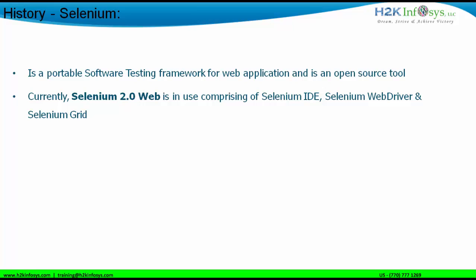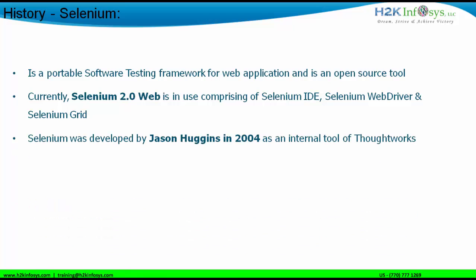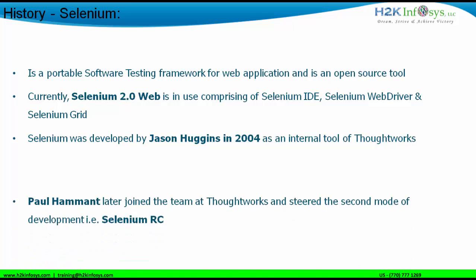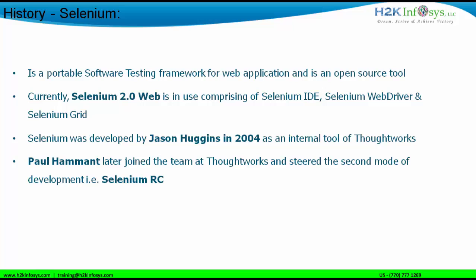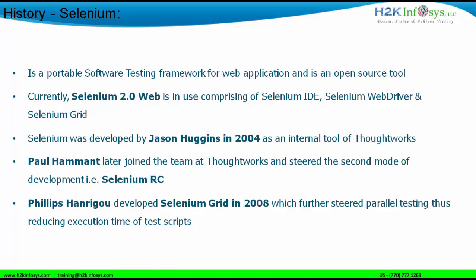Selenium 2.0 is nothing but a suite of tools. Let us look at the history of Selenium. Selenium was actually developed by Jason Huggins in 2004. He was one of the developers working at ThoughtWorks, and he made this particular tool as an internal tool to be used at ThoughtWorks. Later, a person called Paul Hammond joined the team at ThoughtWorks and steered the second mode of development — Selenium RC, where RC stands for Remote Control.